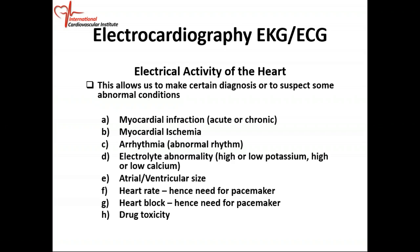We can also use the ECG to diagnose electrolyte abnormalities such as low potassium, high potassium, or high or low calcium. We can determine the size of the cardiac chambers — the atrium and the ventricles — and look at heart rate. If the heart rate is too low, we call that bradycardia, which gives us an indication of whether the patient needs a pacemaker. And for drug toxicity, we can use the EKG to determine if a patient is taking too much of a medication.